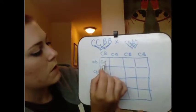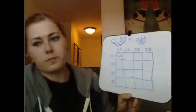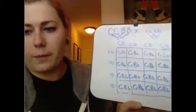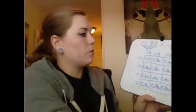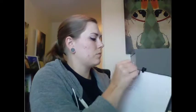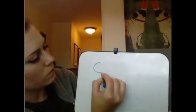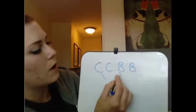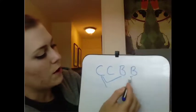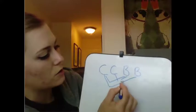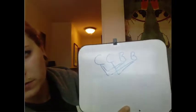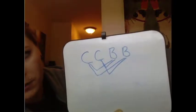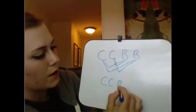You take every possible combination from each parent and put them across the top and side of the square. Then you combine them: big C, little c, big B, little b — which is what it will be for all of them, since one parent is all homozygous dominant for both traits.